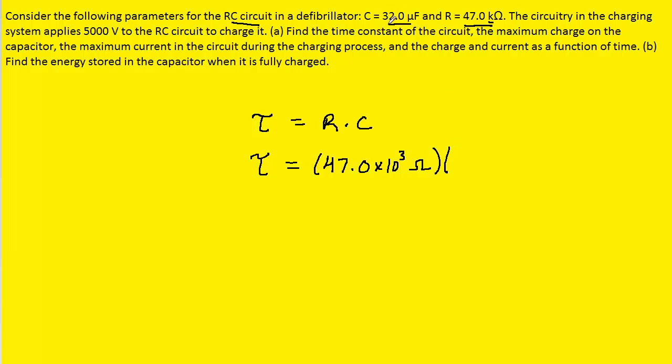And then for the capacitance, we have 32.0 microfarads, and to change that into the standard unit of farads, we would need to multiply it by 10 to the minus 6. We could then pick up our calculators and multiply these two quantities. And when we do that, we get 1.504, and the unit of the time constant will be in seconds. And so this is the correct answer to the first part of part A.